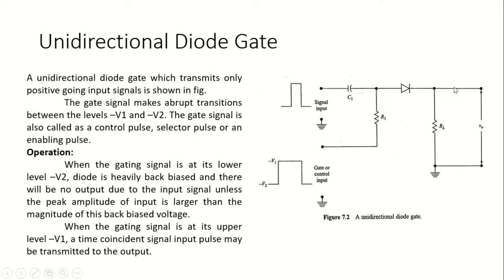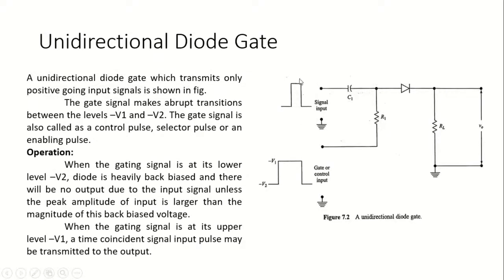When the gating signal is at its upper level (minus v1), a time-coincident input pulse may be transmitted. For example, if the input is plus 10 and minus v1 is minus 5, the output observed is plus 5 volts due to superposition. If minus v1 is exactly zero, the entire input signal appears at the output without distortion.